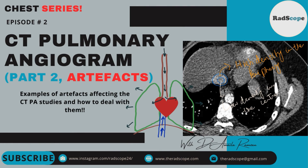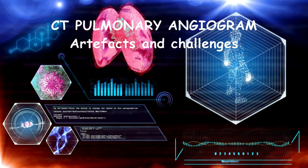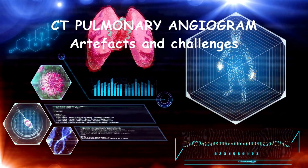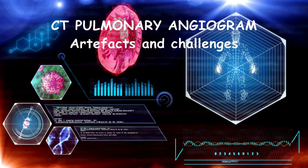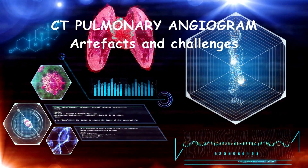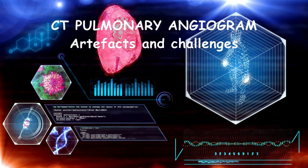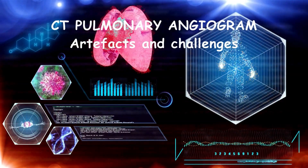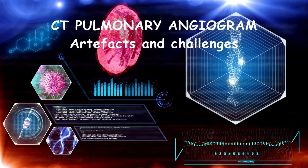Hello everyone, hope you all are doing well. This is the second part of our episode on CT Pulmonary Angiogram. In this episode, I'll share with you several cases and examples of how various types of artifacts affect the quality of CT Pulmonary Angiogram, the knowledge of which is essential for accurate interpretation of these studies. You'll also learn how to identify them and what measures can we possibly take to avoid some of these in future.